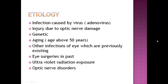The etiology of refractive errors can be, first of all, infection — infection by virus, adenovirus — and then injury due to optic nerve damage. If there is nerve damage, no matter how the light has been received or reflected, the vision message cannot reach the brain.